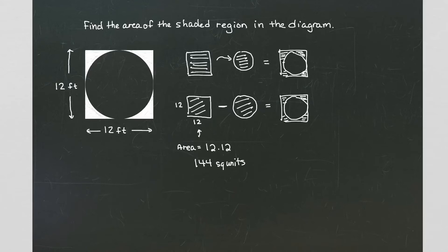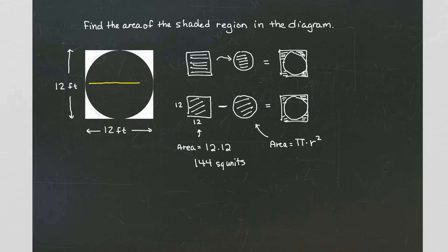Then I also want to worry about the area of the circle inside. The area for any circle is pi times the radius squared. But I have to figure out what my radius is. If we analyze, we notice that the whole length across the bottom is 12 feet, so the whole length across the middle is also 12 feet. That's the diameter of my circle. The radius is simply half of the diameter, so my radius is 6 feet.